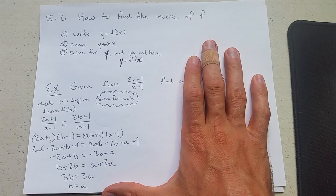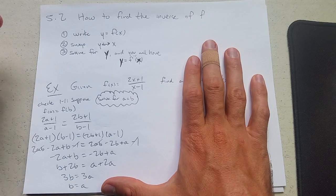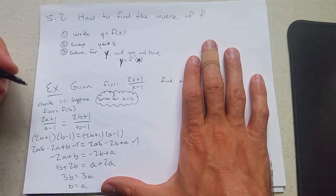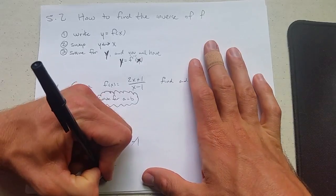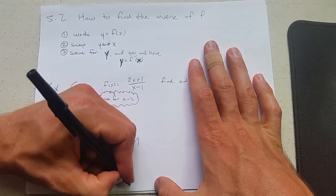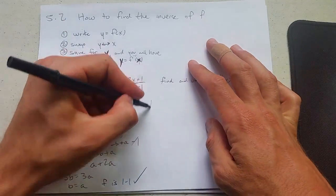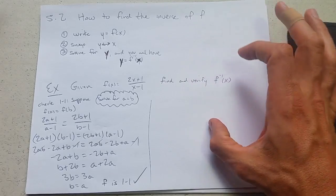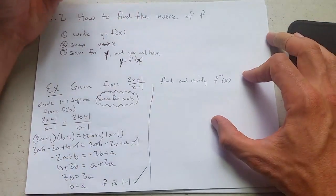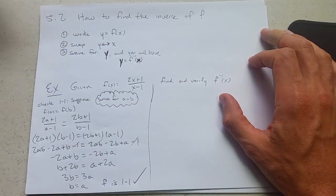This is what we're looking for. If we get here, we have a one-to-one function. So the answer is yes, we do have one-to-one. So I can write f is one-to-one, check. So we have a one-to-one function. Now we're going to find f inverse. We're going to do this three-step process.